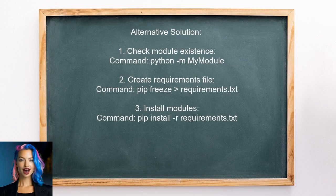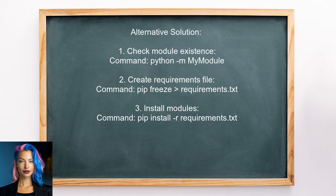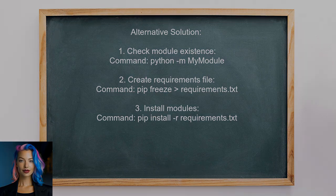Another alternative approach involves checking if a module is installed using the command line. You can run python -m MyModule to see if the module exists. If you want to manage your modules more effectively, they suggest using pip freeze to create a requirements file. This file will list all the modules in your Python installation. Then you can use pip install -r requirements.txt to install the necessary modules automatically.